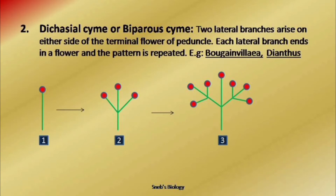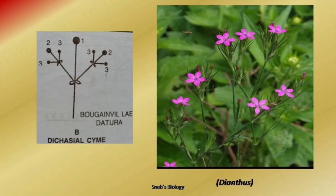Next, if every time two branches are produced, we call it biparous cyme or dichasial cyme. Look at the diagram — the main axis terminates into a flower. When branching takes place, every time two branches arise from the same point and both terminate into a flower. Then they again produce two branches each time. This is known as biparous cyme, seen in Bougainvillea, Mirabilis, etc.